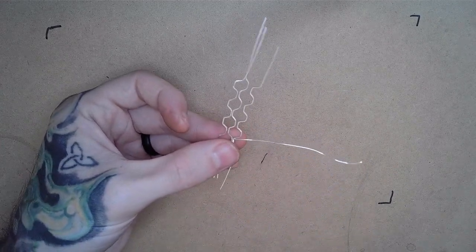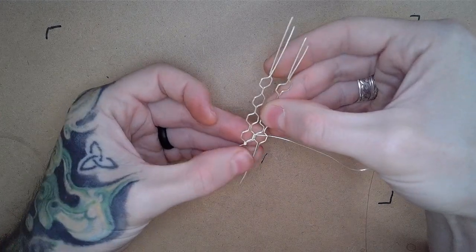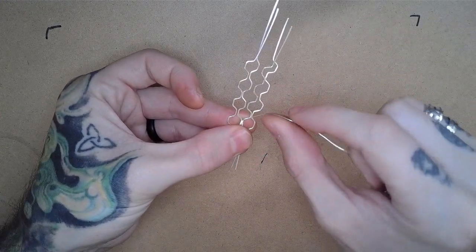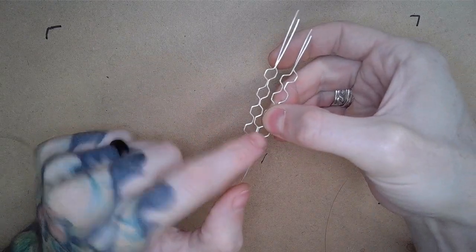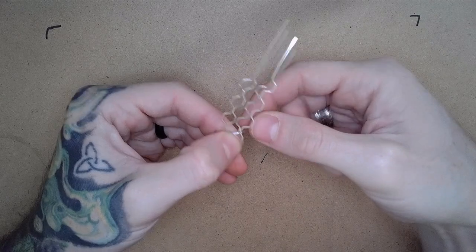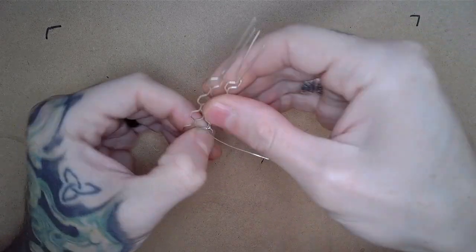We're going to go ahead and connect our last remaining square in the same process, taking our 28 gauge along parallel to the bottom angle of our hex and wrapping eight times around the center join.